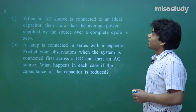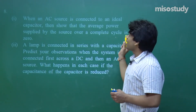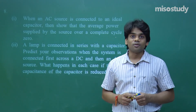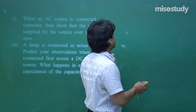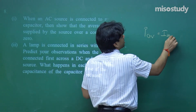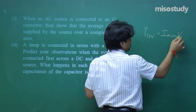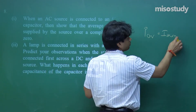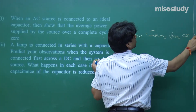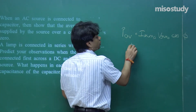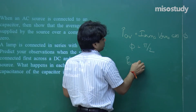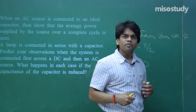Question number 8: when an AC source is connected to an ideal capacitor, show that the average power supplied by the source over a complete cycle is zero. We have derived this: P_avg = I_rms · V_rms · cosφ. For a capacitor, φ = π/2, so cos(π/2) = 0, and it will be zero.